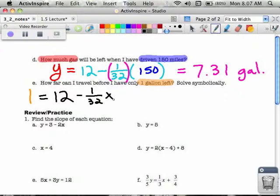So now I have to solve this equation. First thing that I'm going to do is subtract off 12 from both sides. So let's subtract off 12 from both sides. If I subtract off 12 from both sides, I end up with negative 11. And then the 12 is gone over here, because I'm minus 12 here, I'm minus 12 there. And that's equal to negative 1 over 32 X.